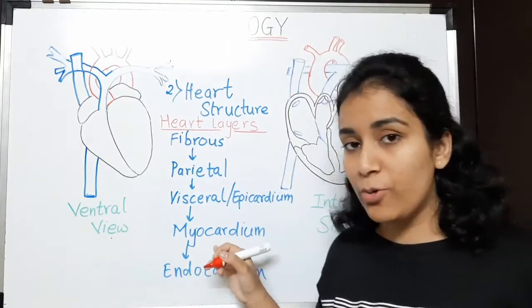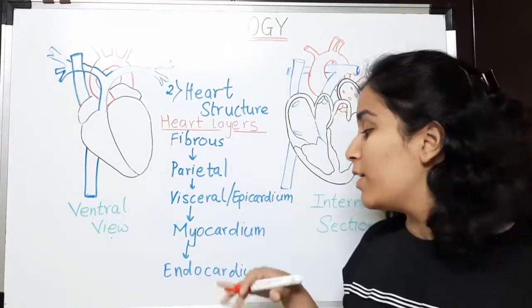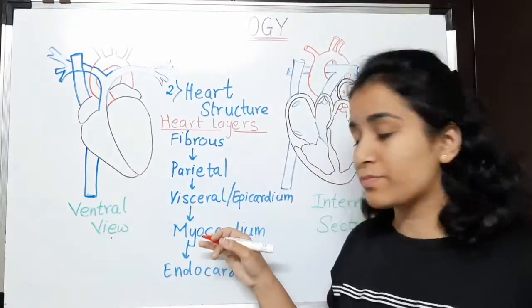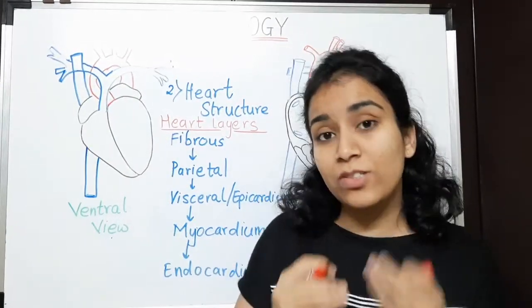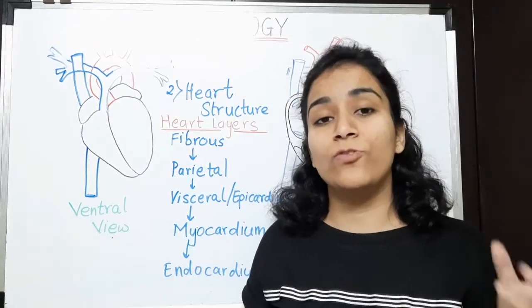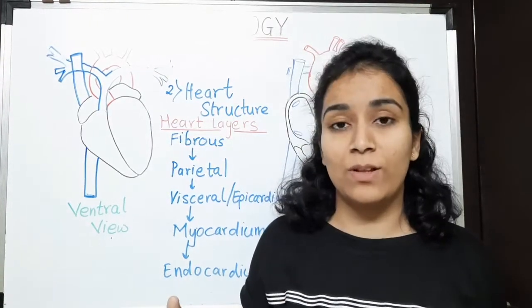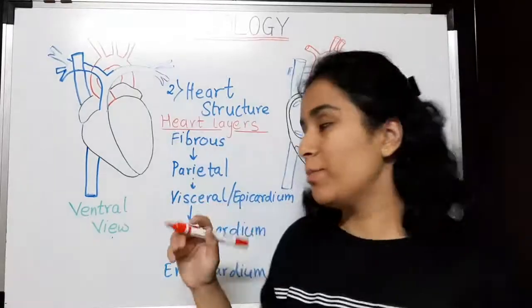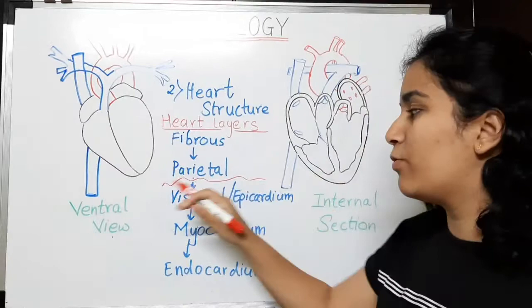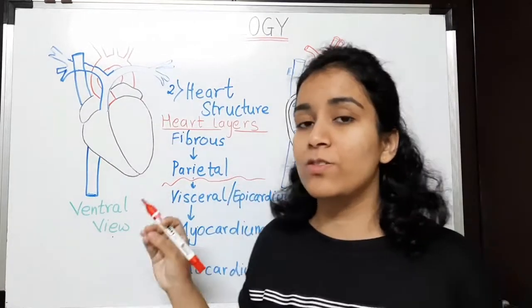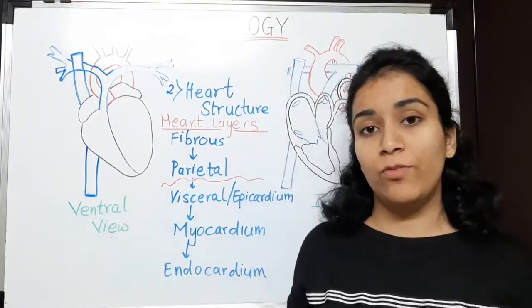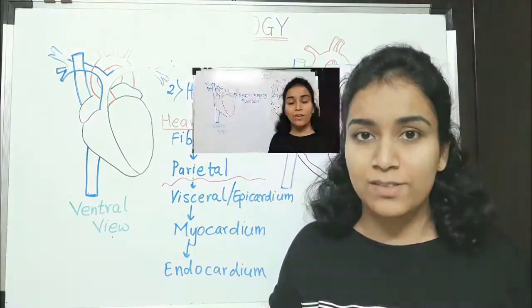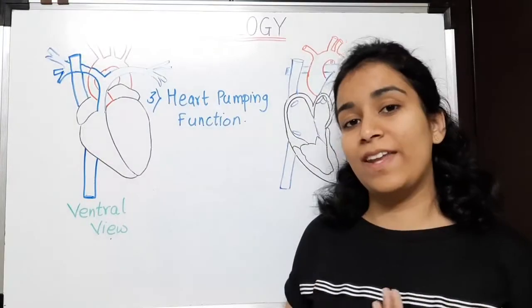After that comes myocardium and endocardium. Myocardium is actually a muscle layer and it is related with the functioning of systole and diastole. That is contraction and relaxation of heart muscle. In between visceral and parietal layer, a fluid is present. It is known as pericardial fluid and that prevents heart from direct shock or direct mechanical shock. So, now let's move on to our next part.